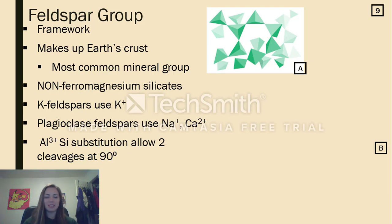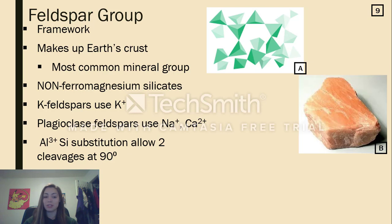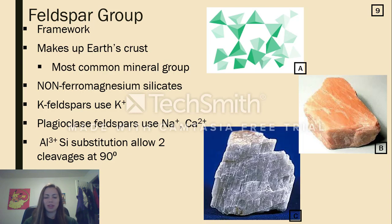They are the only non-ferromagnesium silicates, using either potassium, calcium, or sodium for those cations. Feldspars that bind to potassium cations are known as K-feldspars, where those that use sodium or calcium are known as plagioclase feldspars. The plagioclase feldspars are usually a little bit more grayscale than the K-feldspars.